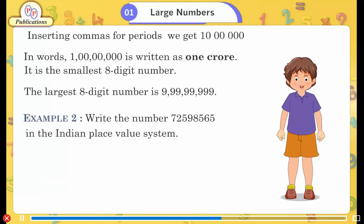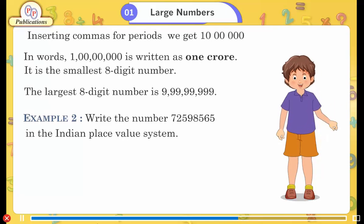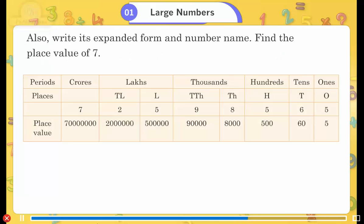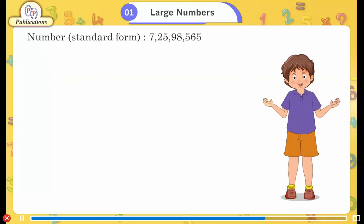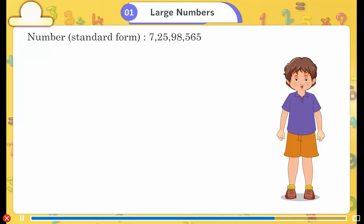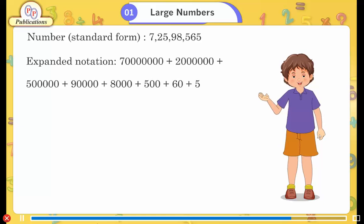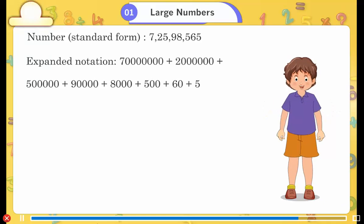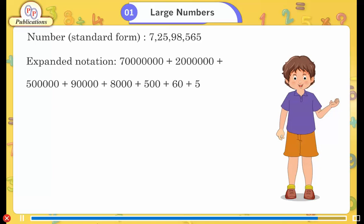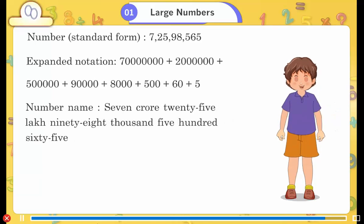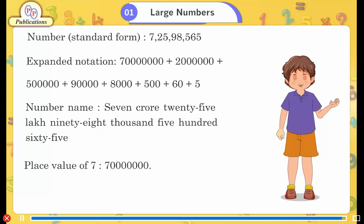Example 2: Write the number 7 crore 25 lakhs 98,565 in the Indian place value system. Also write its expanded form and number name. Find the place value of 7. Answer — standard form: 7,25,98,565. Expanded notation: 7 crore + 20 lakh + 5 lakh + 90,000 + 8,000 + 500 + 60 + 5. Number name: seven crore twenty-five lakh ninety-eight thousand five hundred sixty-five. Place value of 7: 7 crore.